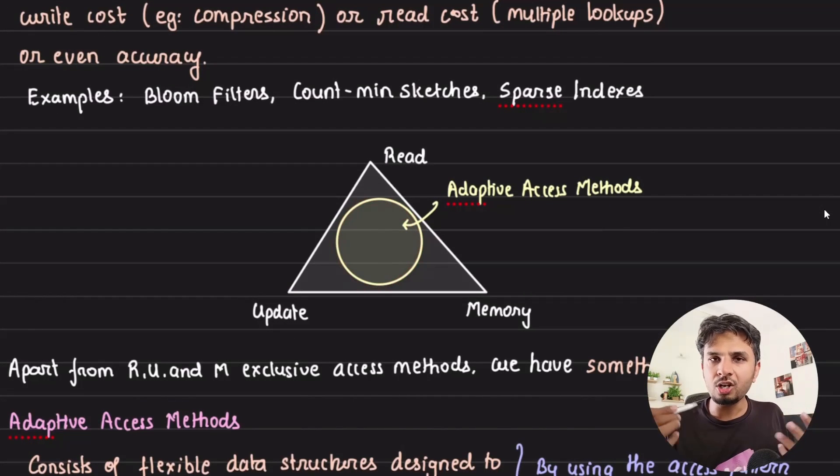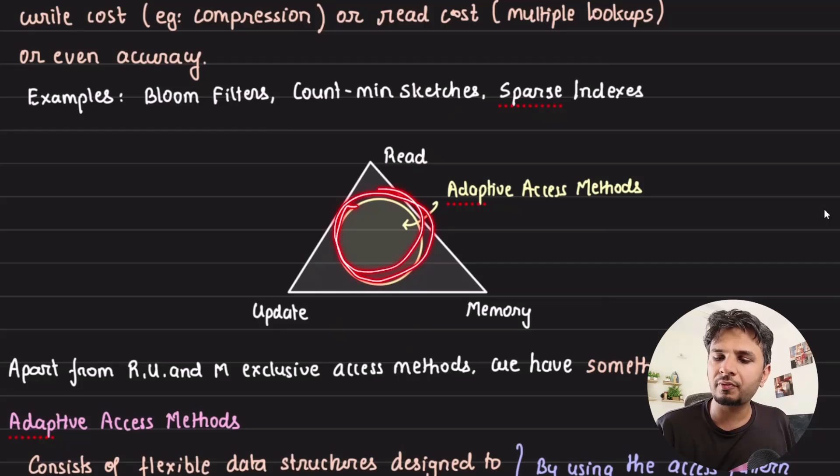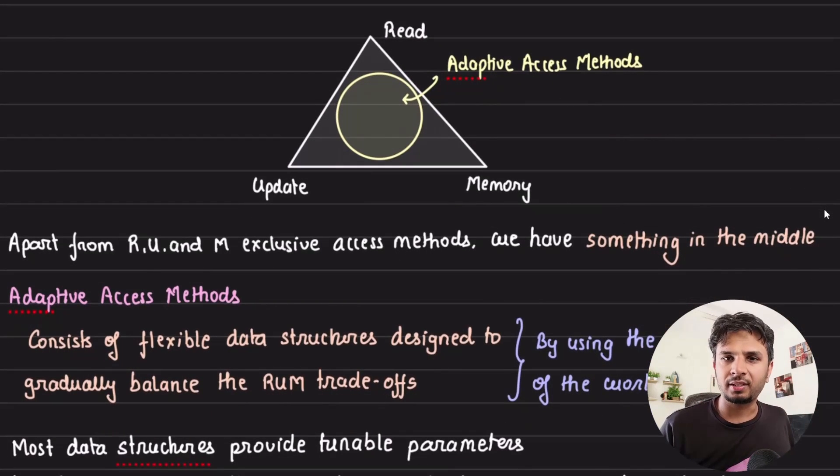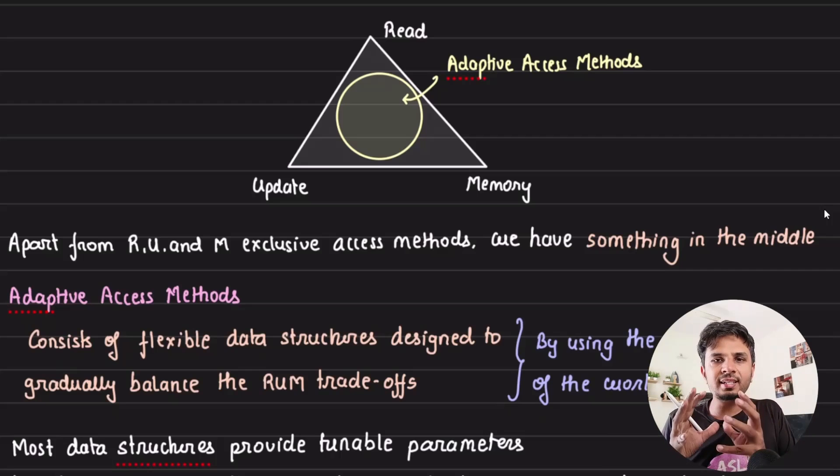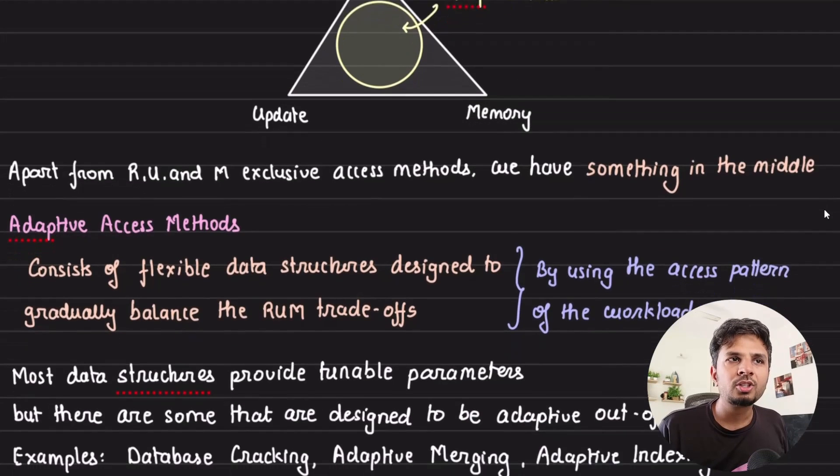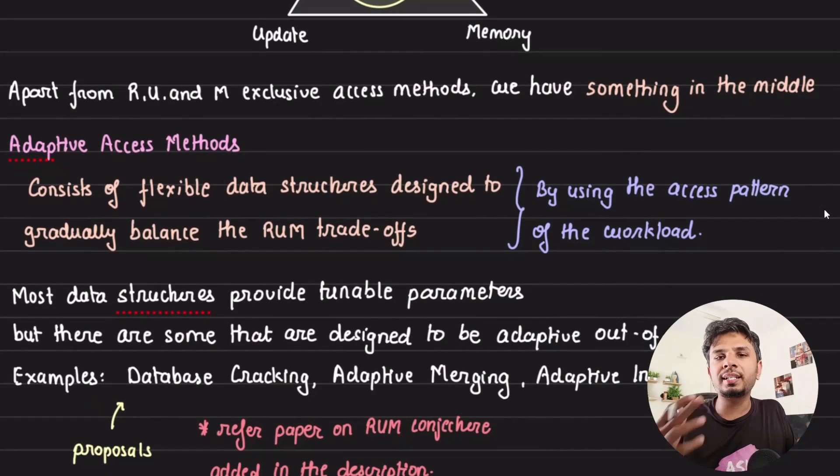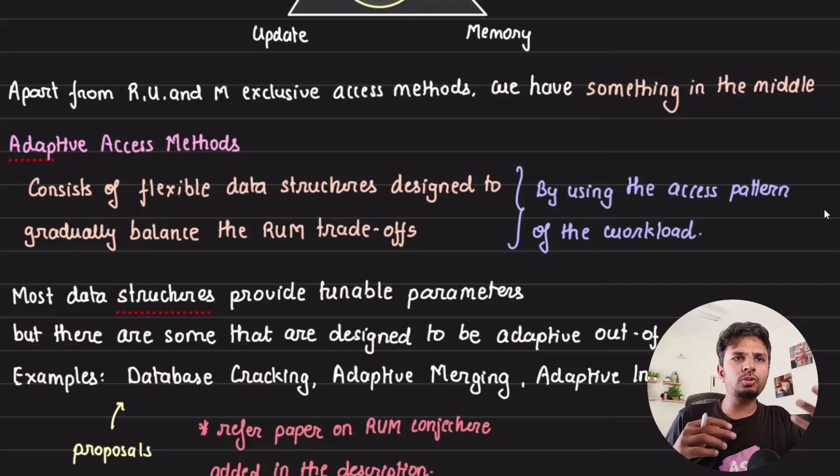There's a fourth category which sits right in the middle. We looked at read-optimized, write-optimized, and storage-optimized workloads, but there's a class of data structures and algorithms that fit in the middle region: adaptive access methods. These are flexible data structures designed to adapt depending on the workload or access pattern.